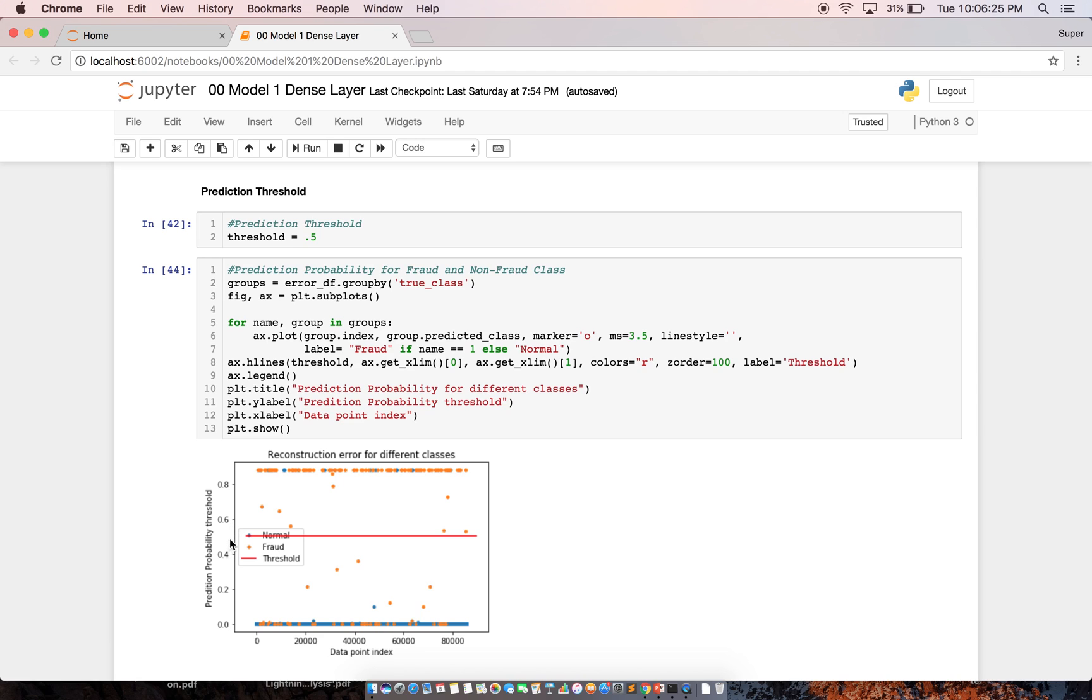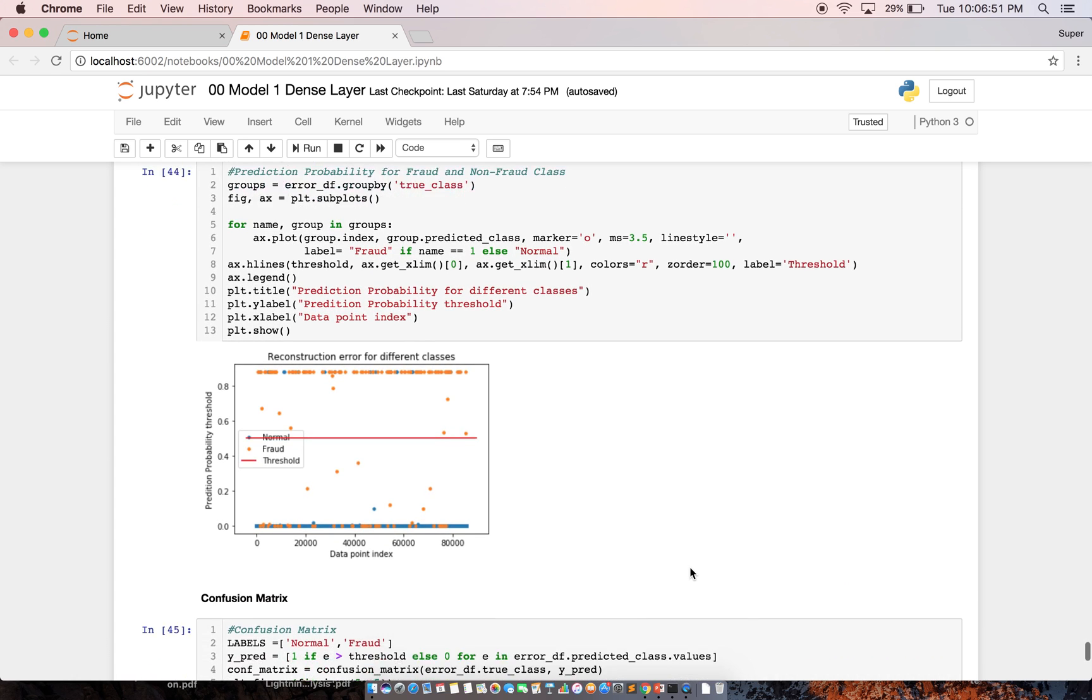And I came up with this scatter plot here. In this scatter plot, the red line indicates the prediction probability threshold, which is kept at 0.5, which classifies these two classes, fraud and non-fraud class based on this threshold. This clearly indicates that the prediction probability is really classifying both the classes. This is very good.